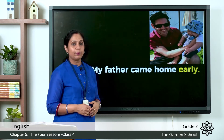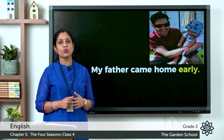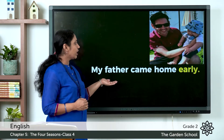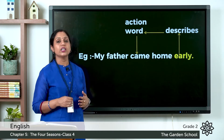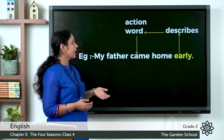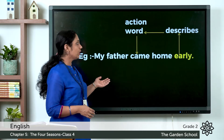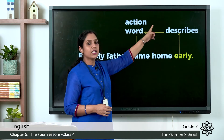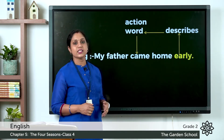Let's look at another example: My father came home early. The verb is came. The word early is describing the action word came — it's not describing father or home, it's describing the verb came. So early describes the action word came, and we can say that early is the adverb here. An adverb tells us something more about a verb.